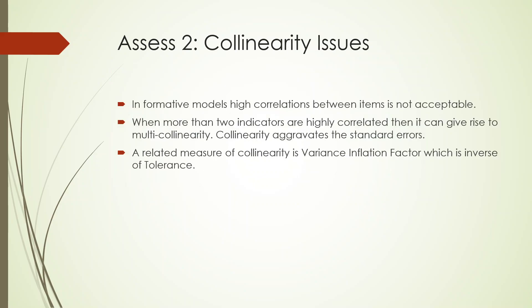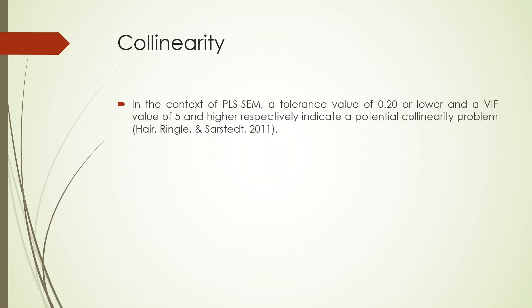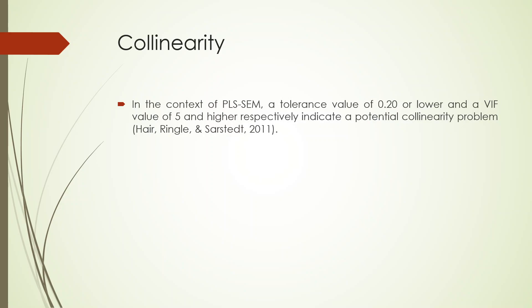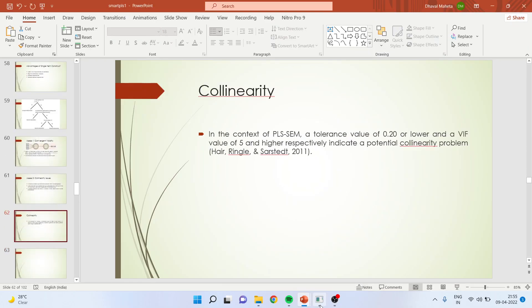To carry out this analysis in SmartPLS, we will go in and first of all activate this. This construct is attrition, captured by three statements — one, two, three. We are introducing a global item which is being captured on the reflective scale. To carry out the convergent validity, you will go to Calculate, then Bootstrapping — according to the authors this should be kept at 5,000, but for tutorial purposes I have kept it at 1,000 to save time.